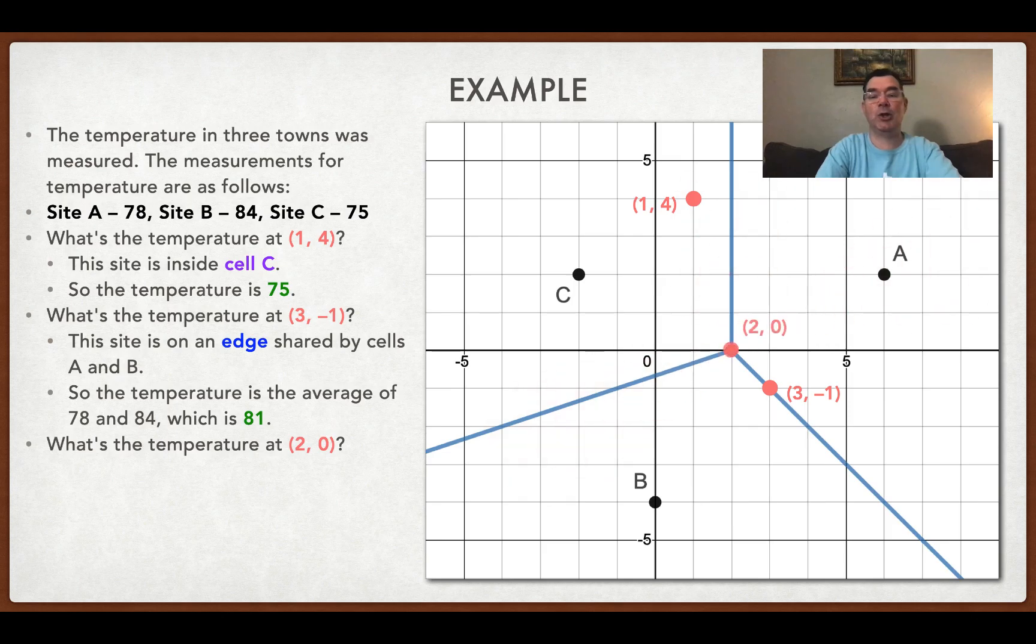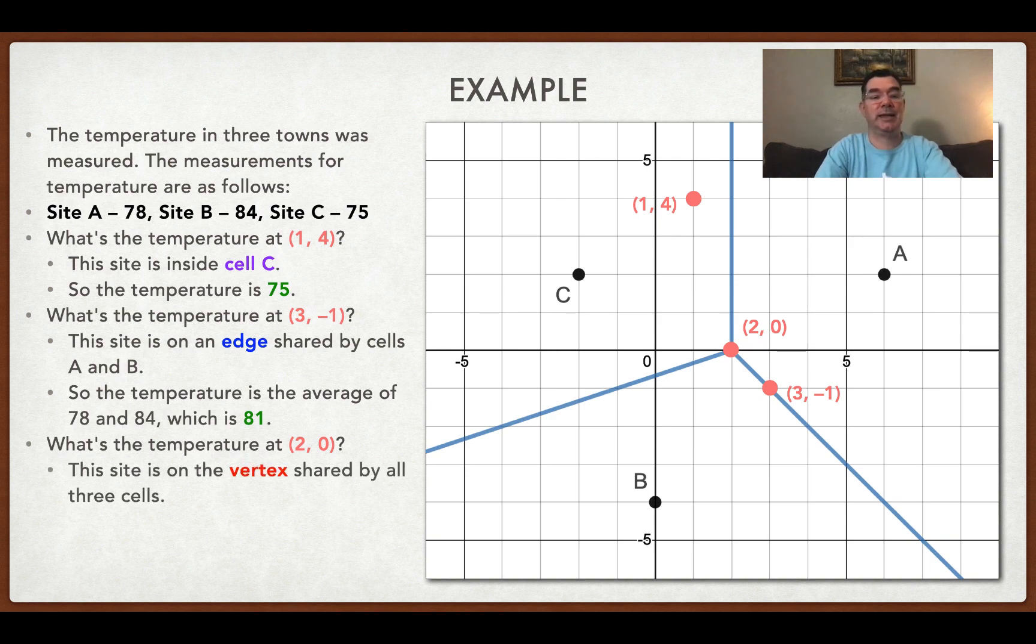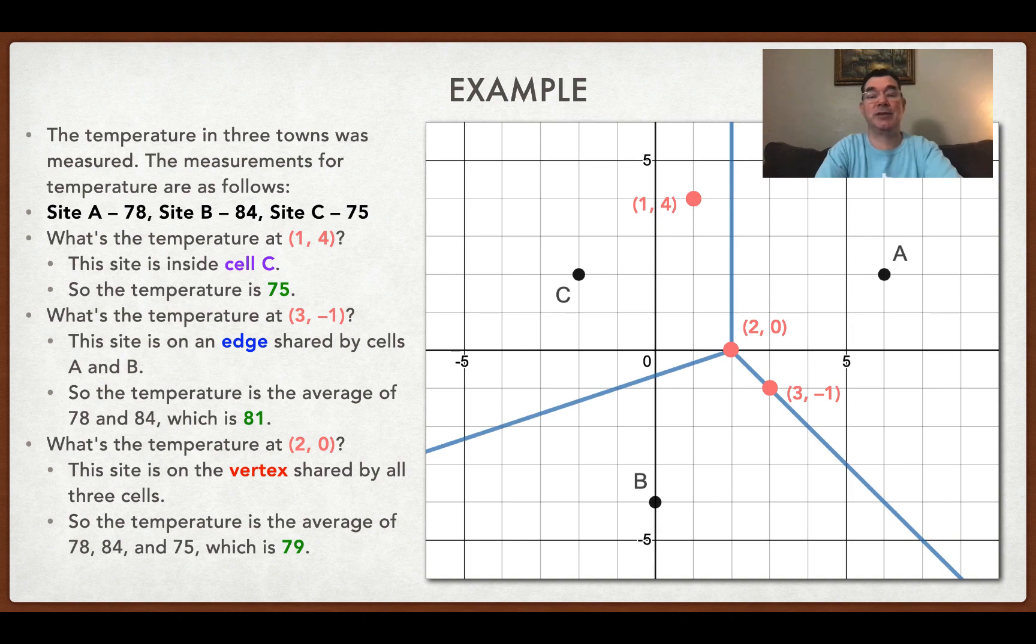And finally, if I look at the vertex, that vertex is touching all three cells. So in order to find the temperature at that point, I'm going to take the average of the temperatures of those three sites. And that is going to be 79. So you just add them all together, divide by 3, and you get a temperature of 79.